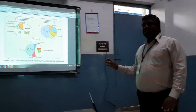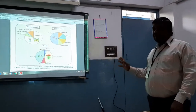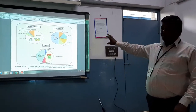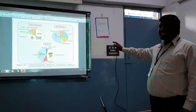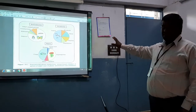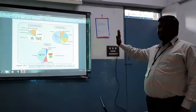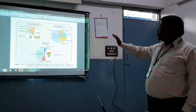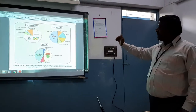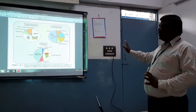Now we will be studying this pie chart, also called a biodiversity pie chart. If you look into it, they are given 3 varieties.